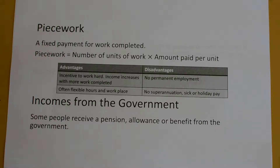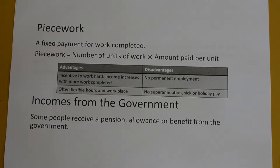Disadvantages of piecework include no permanent employment — you're only in business for as long as they want you. If they don't need any more shirts, then poor Mr. Taylor has no more business. There's also no superannuation, sick pay, or holiday pay, because you are only paid based on what you do.